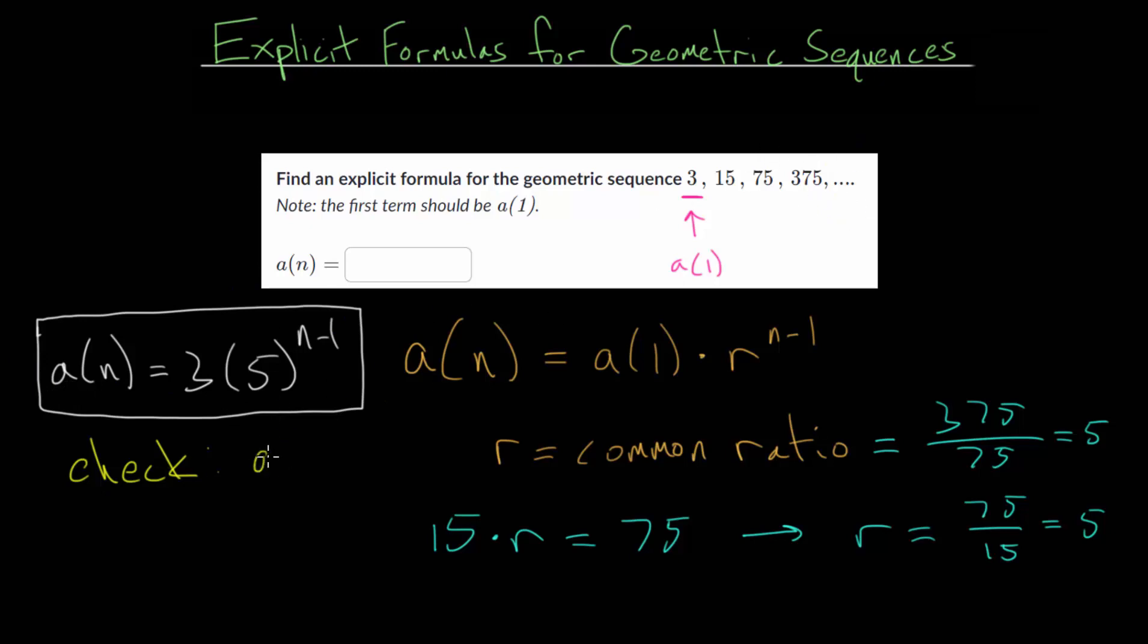the fourth term is 375. So a of 4, we know that that's 375. So we want to make sure our formula works. Since remember, these explicit formulas are particularly useful for finding a specific term in the sequence without having to generate the entire sequence. So we can just plug in 4 into our formula and hopefully we'll get 375 and that will tell us if this is right or not.